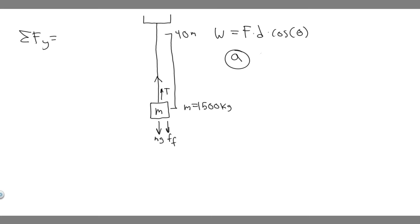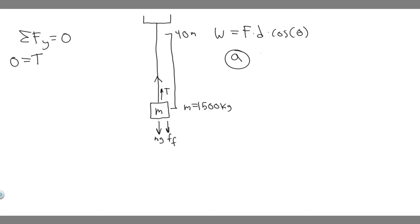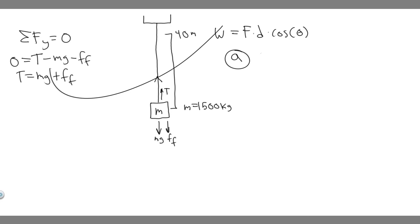Since it's traveling at constant speed, acceleration is zero, so the sum of the forces in the y direction equals zero. Adding up the forces: tension is positive (upward), and then minus mg and minus the force of friction. This tells us that the tension force equals mg plus the force of friction, which makes sense.